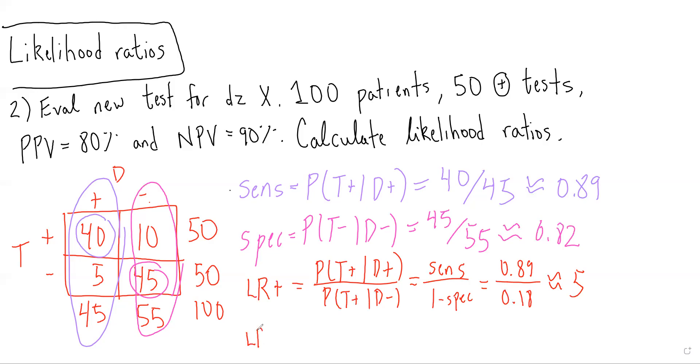LR negative equals the probability of a negative test given you have the disease over the probability of a negative test given you don't - again, with over without. That's 1 minus sensitivity over specificity, which equals 0.11 over 0.82, or approximately 0.13.